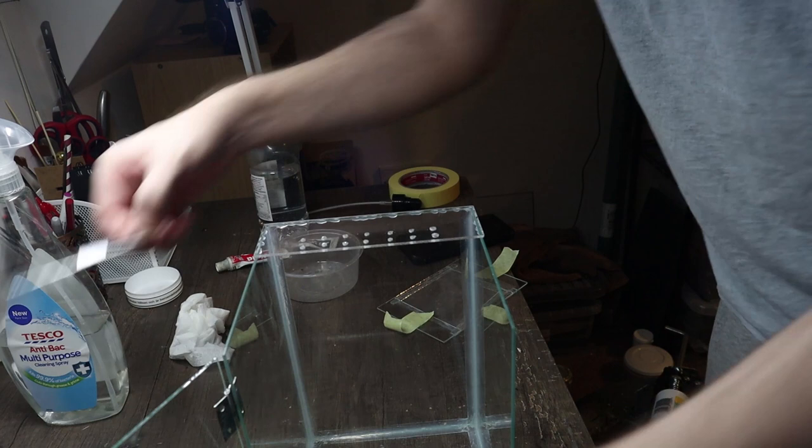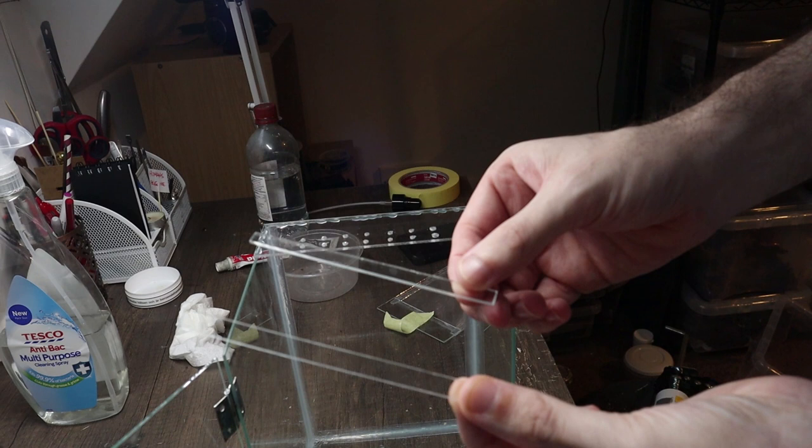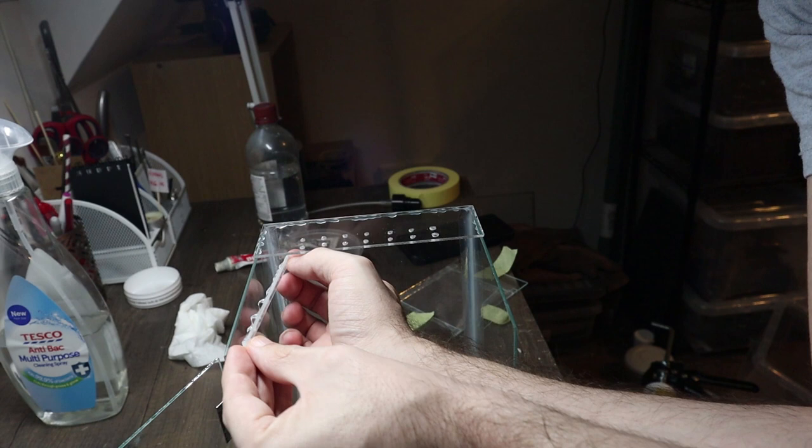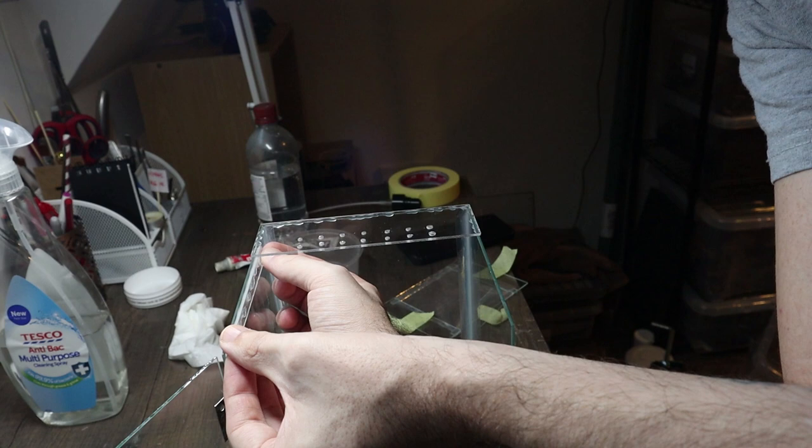There's an additional step here that you don't have to do, but I just do it as a bit of extra security. I cut some glass strips out and attach them near the top just to give a little bit more surface area for the top lid to sit on. It just minimizes the risk of the top lid dropping down when you're sliding it out.